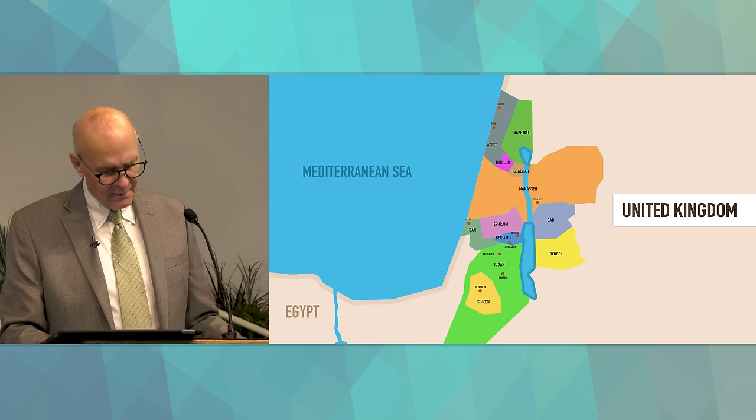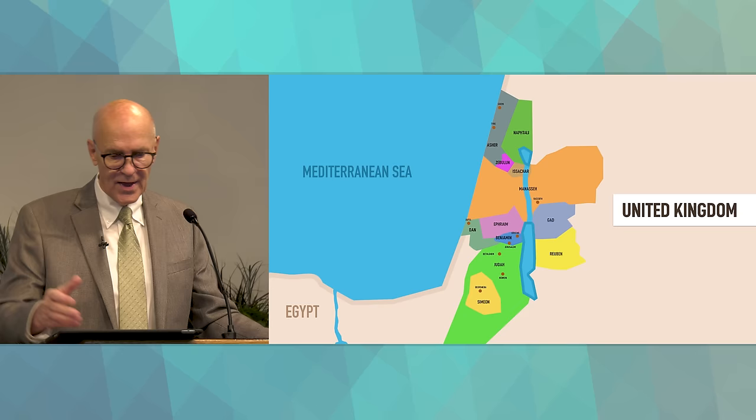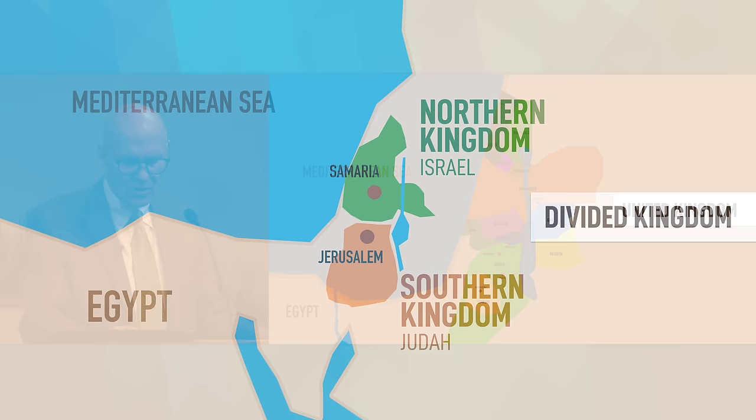When Solomon died in 931 BC, civil war broke out over who would reign over the 12 tribes. They had a united kingdom — all 12 tribes under one king for about a century. After Solomon's death there was a power struggle that eventually led to a split: the divided kingdom.